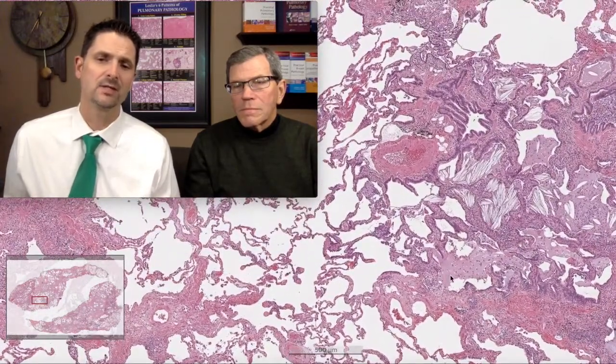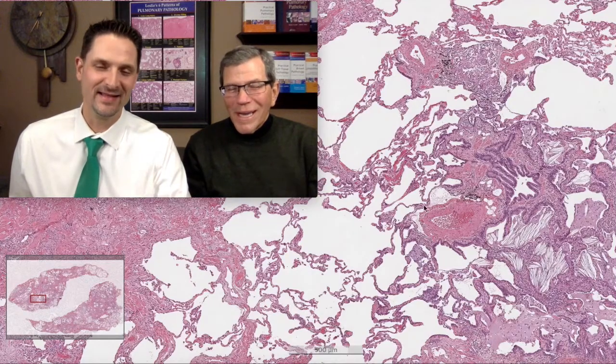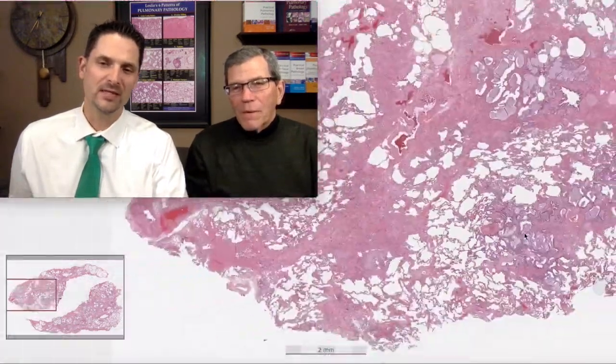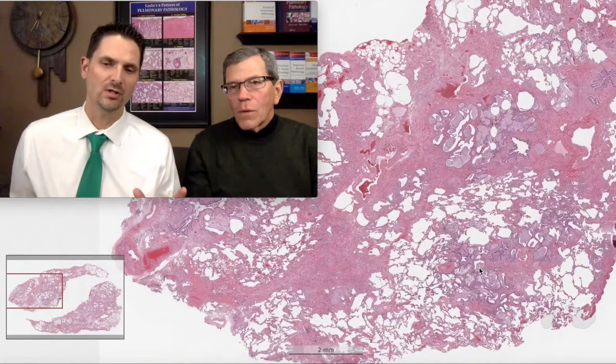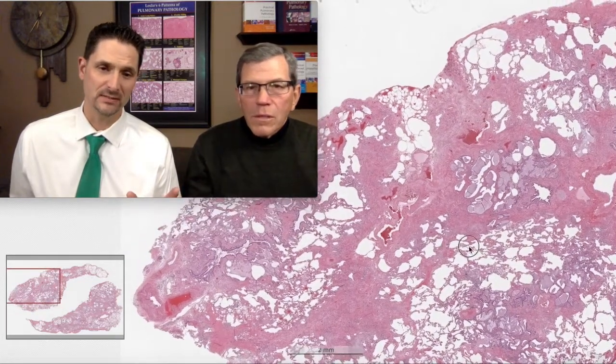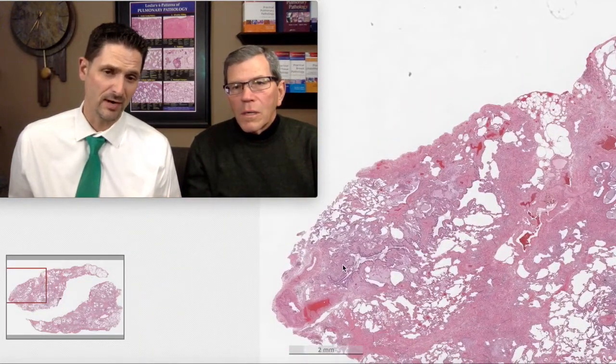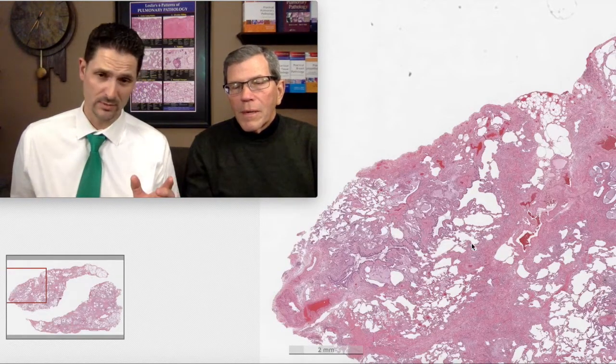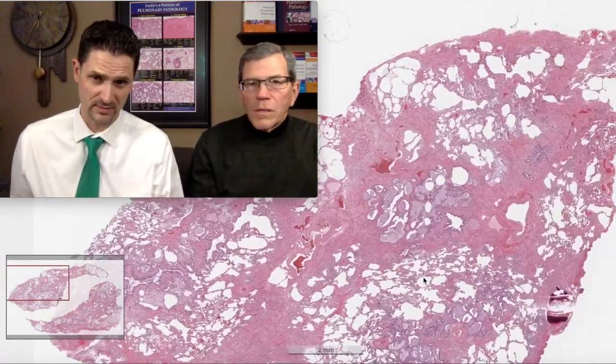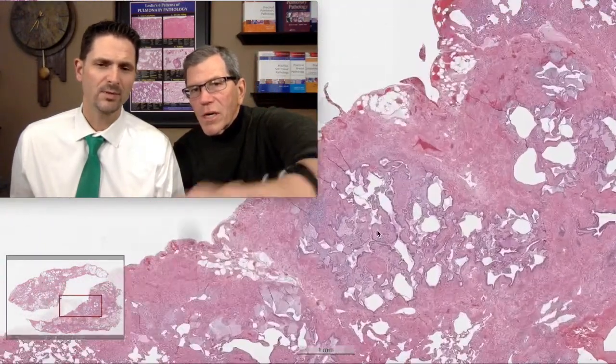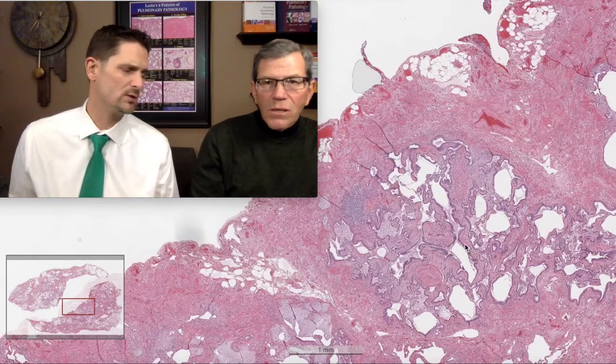There is peribronchiolar metaplasia, mucostasis, bronchioloectasia, and scarring. At higher power we can recognize there's active fibroplasia within these areas and abundant peribronchiolar metaplasia. This is the donut hole of fibrosis — it's no longer a hole, it's a dense fibrotic center with the artery right there. When I see something like this I say: this is strongly suspicious for an airway-centered fibrosing process. Some of these lobules are end-stage and you can't distinguish whether fibrosis started inside or outside.